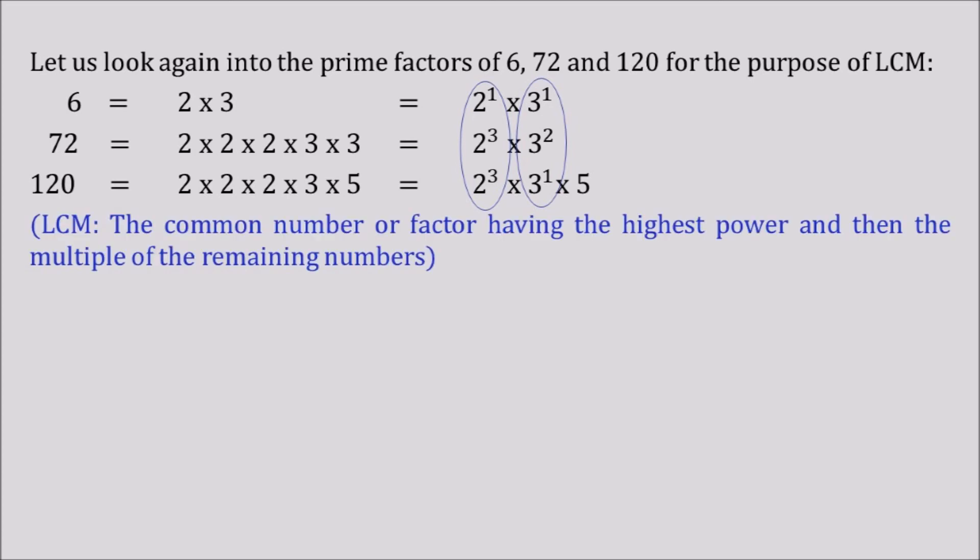Looking into the LCM rule, the common number or factor having the highest power and then the multiple of the remaining numbers is the LCM. So here we are going to consider 2 and 3 having the highest power and then we are going to take the remainder of the numbers. So the highest power for 2 is 3 and the highest power for 3 is 2 and we are going to take also 5.